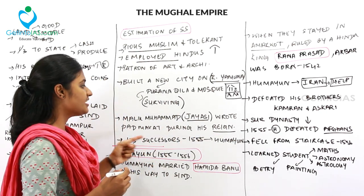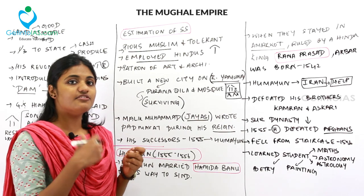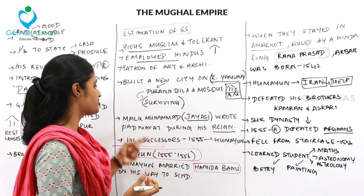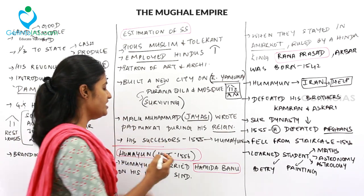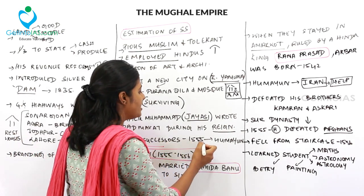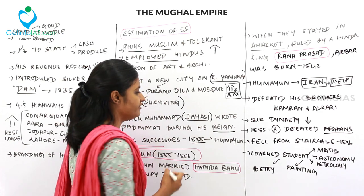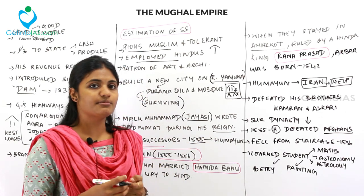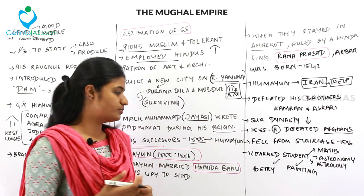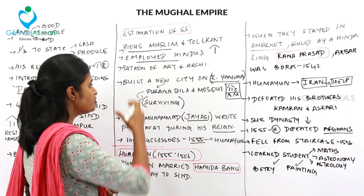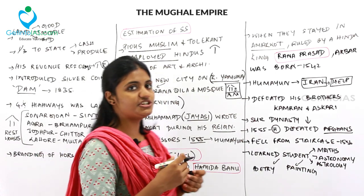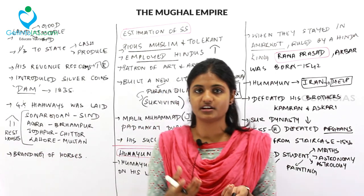Sher Shah's successors were weak and ruled until 1555, after which Humayun returned and took the throne.